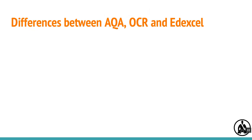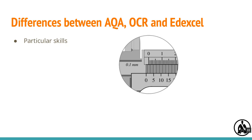It's important to be familiar with your own exam board, but in fact the differences on practical skills between the three major exam boards are not as many as you might think. There are a couple of particular skills that AQA requires that the other two don't. Students need to be able to read a vernier scale and to estimate the uncertainty of an accepted value.